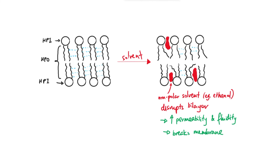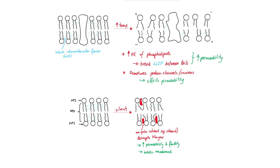At high enough concentrations, a non-polar solvent can completely disintegrate the membrane and break the whole cell apart. So there you have it — these are the two factors that affect membrane structure. Increasing temperature or the presence of non-polar solvents both disrupt the bilayer by breaking the weak intermolecular forces between the fatty acid tails, ultimately increasing permeability and fluidity, and at sufficiently high levels can break the membrane apart entirely.